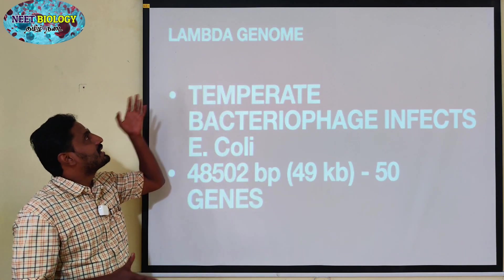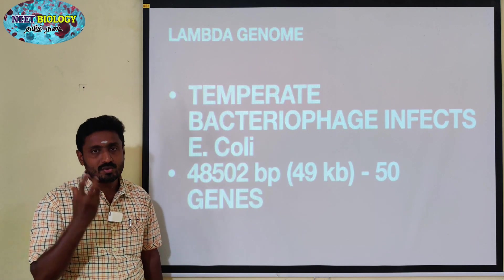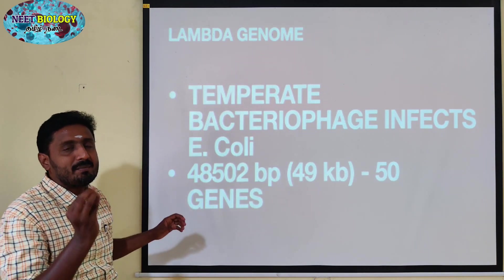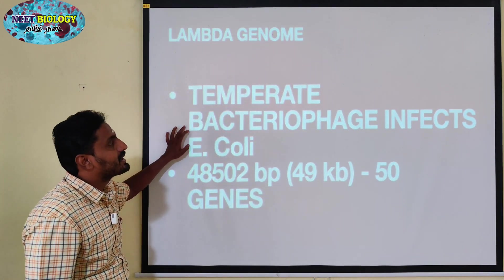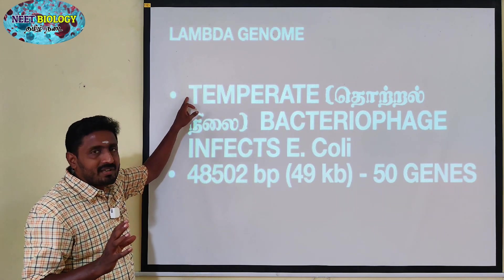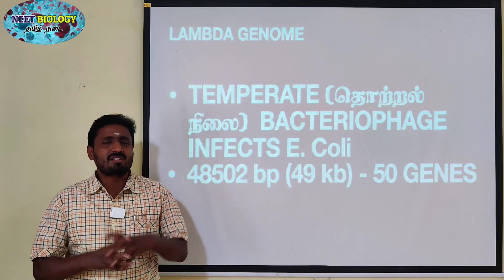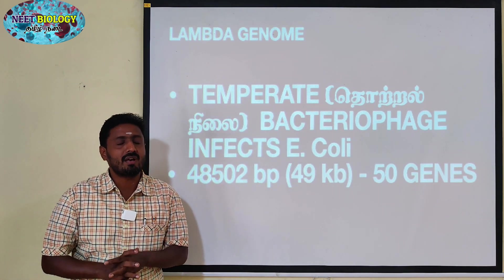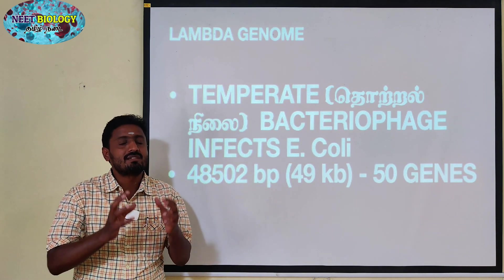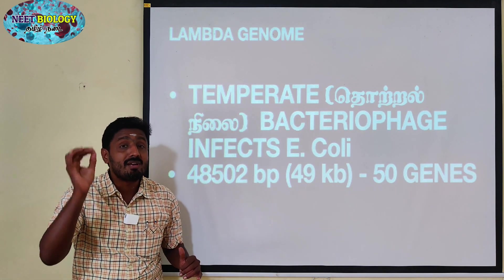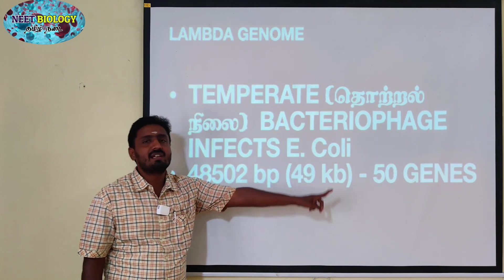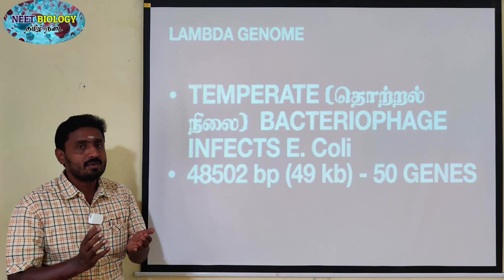Next is the Lambda genome. In L-Phage, lambda phage is a bacteriophage. It has 48,502 base pairs, that is approximately 49 kilobases. One kilobase is equal to 1000 base pairs.